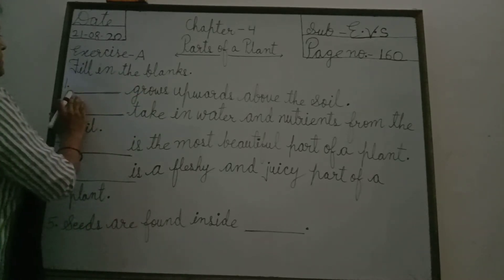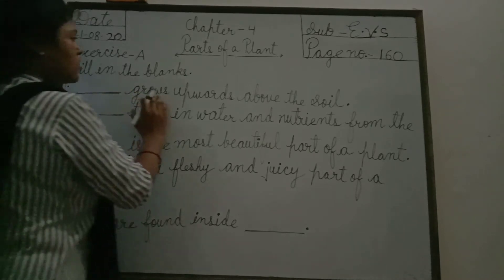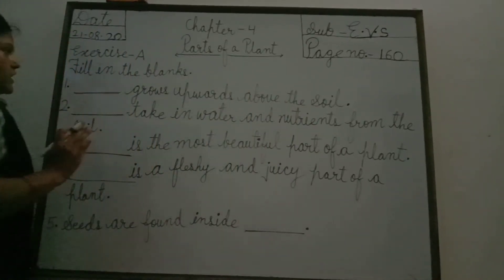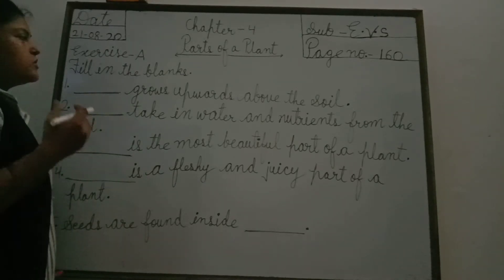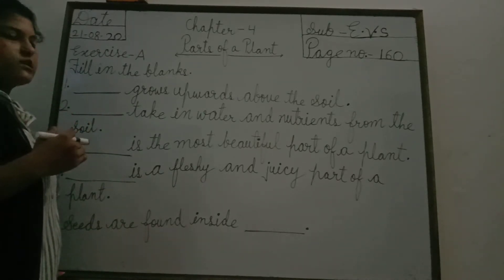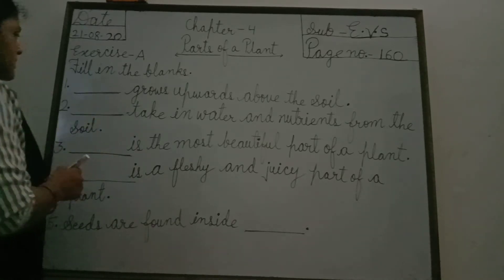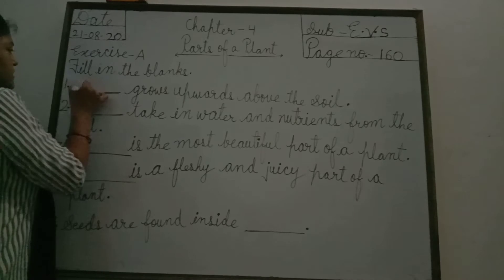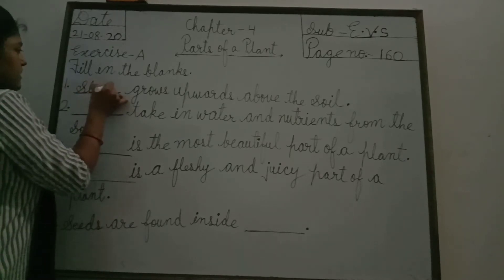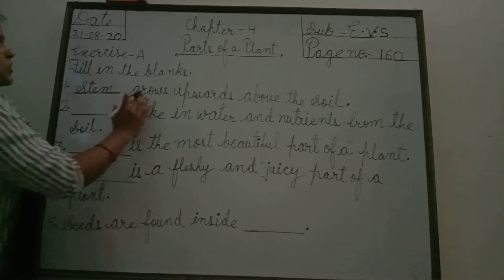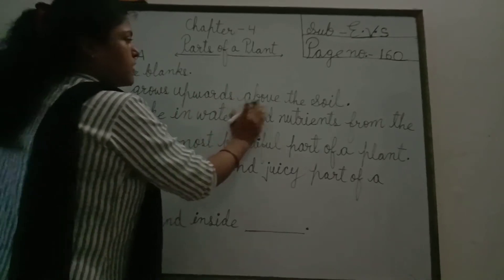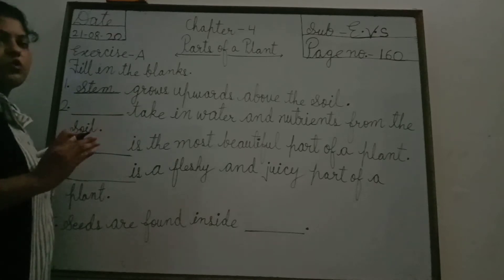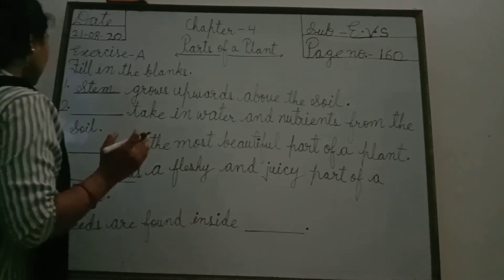Question number 1 is: dash grows upwards above the soil. Plants ke aise koon se part hain jho soil ke oopar grow karate hain? The answer is stem. The spelling is S-T-E-N. Stem grows upwards above the soil. Stem soil ke oopar grow karate hain.